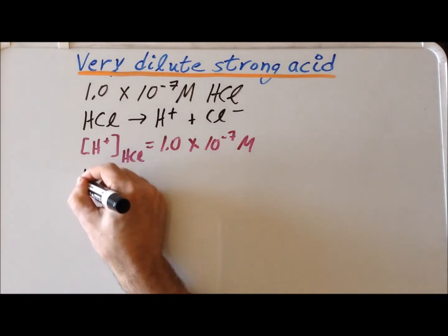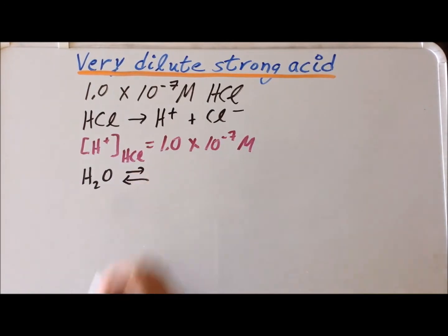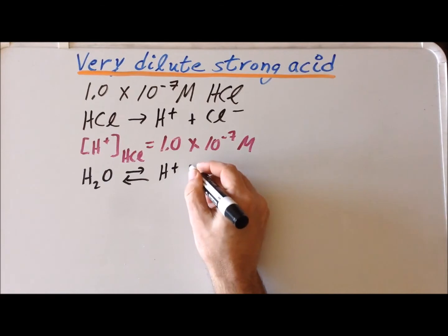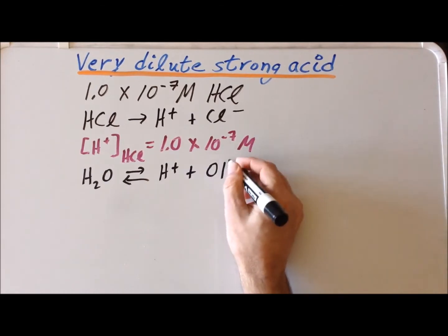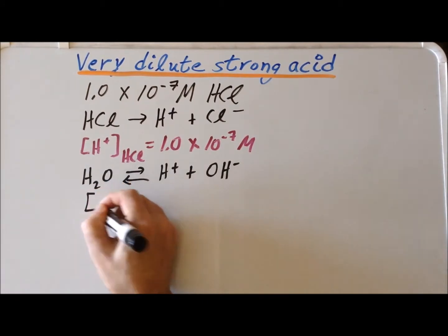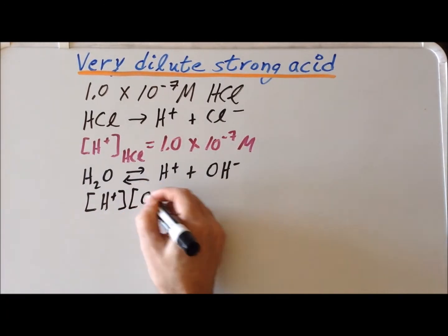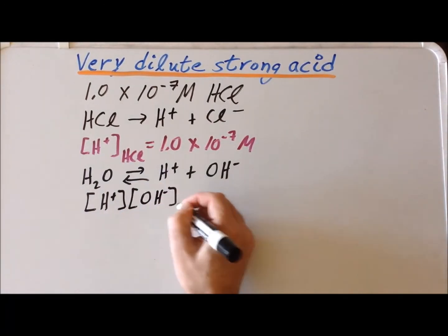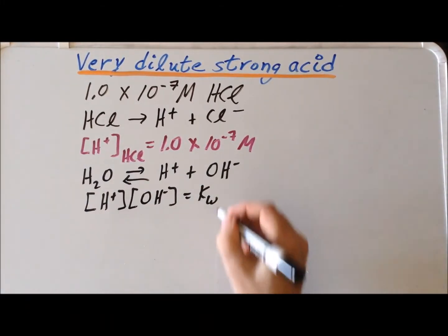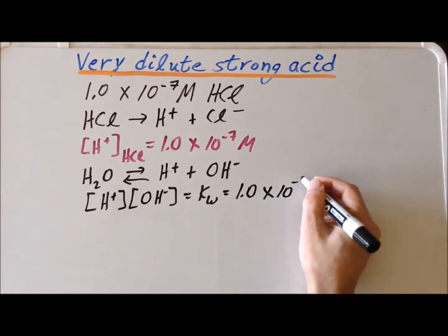The other important reaction going on is the autodissociation of the solvent, water, to form hydrogen ion plus hydroxide ion. We recall that the equilibrium constant expression for this is the concentration of H⁺ times the concentration of hydroxide, which equals the dissociation constant of water, Kw, which has the value of 1.0 times 10 to the minus 14.